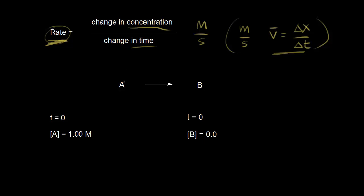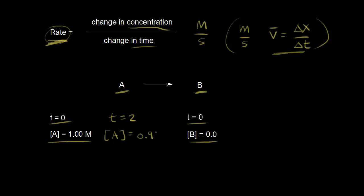Applied to a very simple reaction: we have one reactant, A, turning into one product, B. At time equals zero, we start with an initial concentration of A of one molar, and A hasn't turned into B yet, so the concentration of B is zero. We wait two seconds and measure the concentration of A. Obviously the concentration of A is going to go down because A is turning into B. Let's say the concentration of A turns out to be 0.98 molar — so we lost 0.02 molar of A.